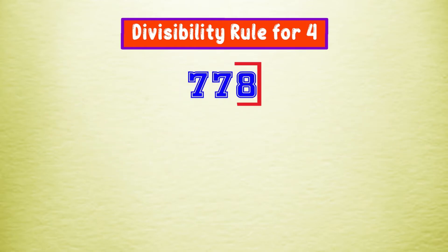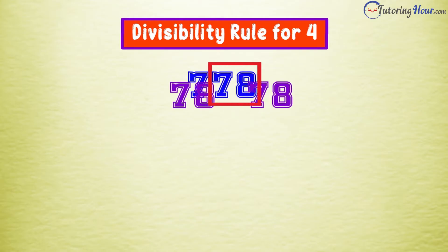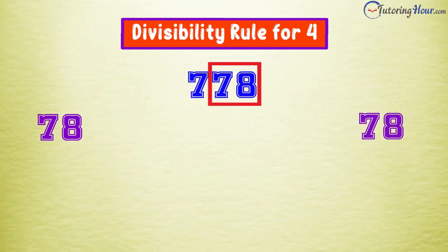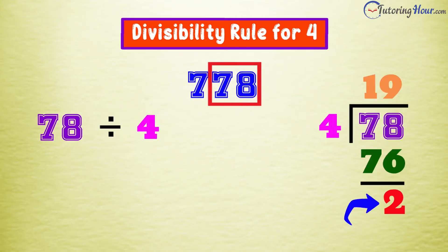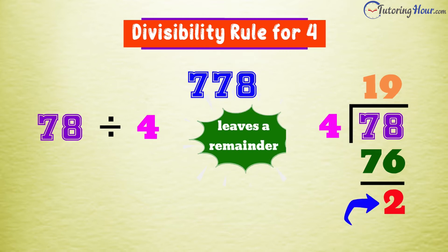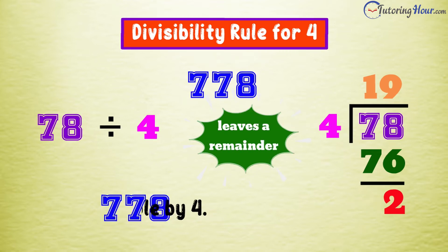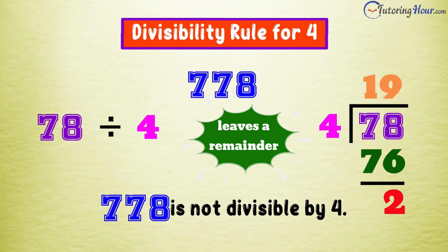Let's take the last two digits, 78, and divide it by 4. We are left with 2 as the remainder. It is pretty obvious that 778 is not divisible by 4.